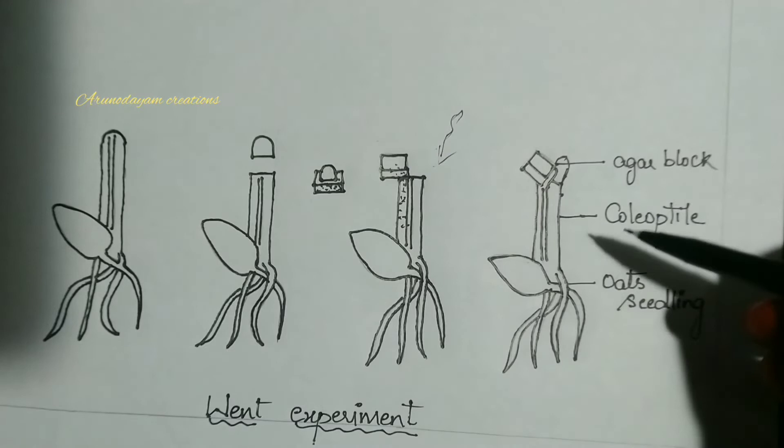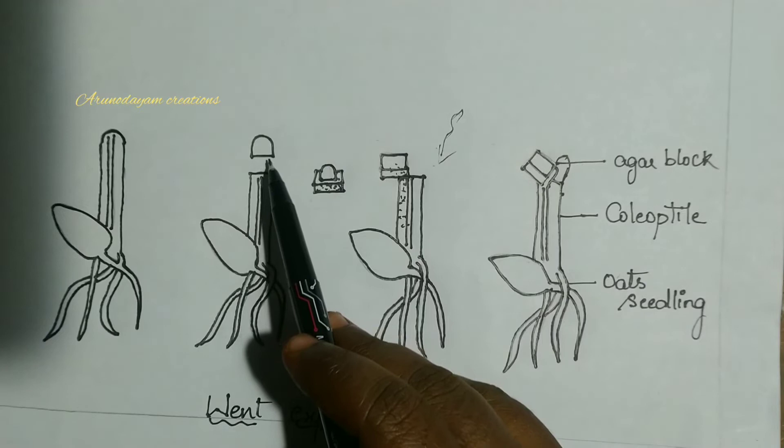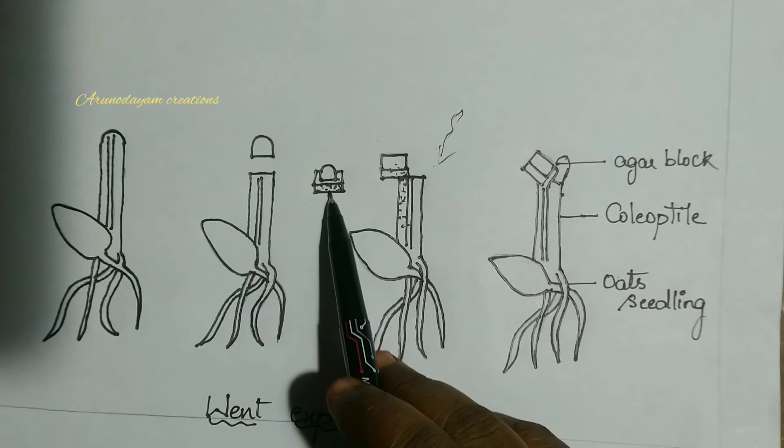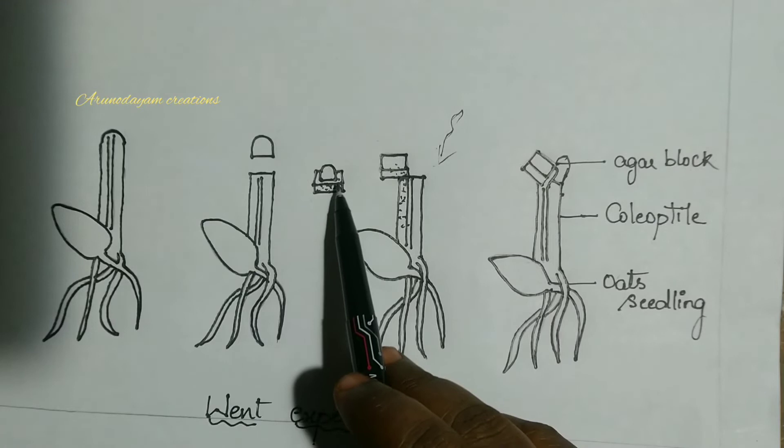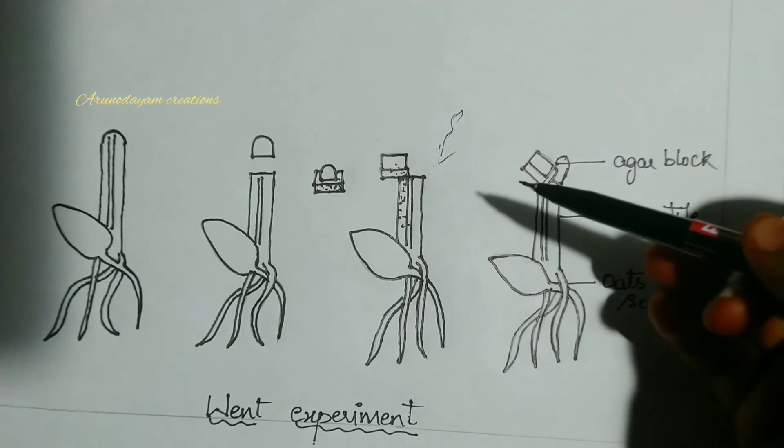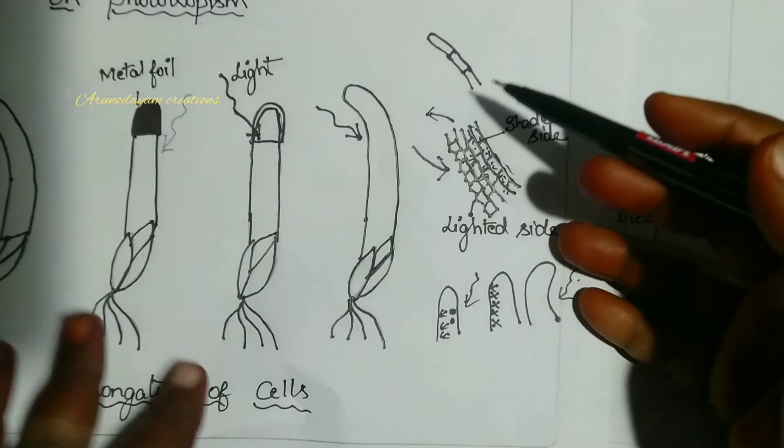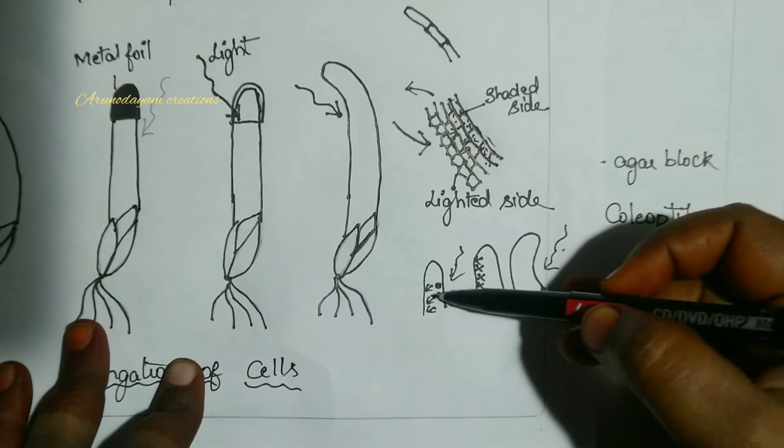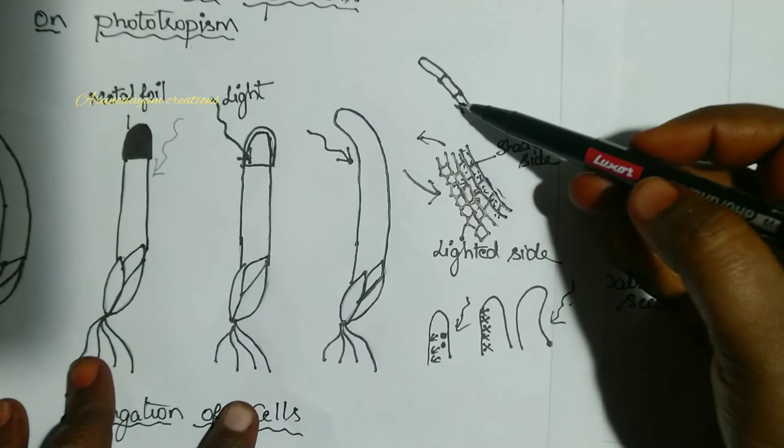The substance responsible for phototropism is present in the cap. When the cap was placed on agar block, the chemical substance was absorbed by the agar block. This substance moves to the opposite side from where light is exposed. On the opposite side, cells elongate and multiply, causing the plant to bend towards light.